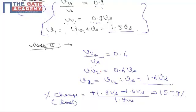So volume of voids in case 2 is 0.6 Vs. So total volume is volume of voids plus volume of solids, that is 1.6 Vs. So volume changes from 1.9 Vs to 1.6 Vs.